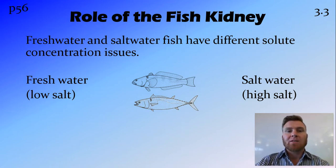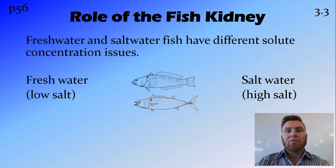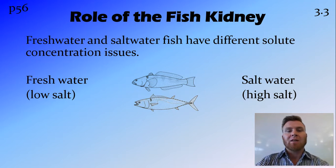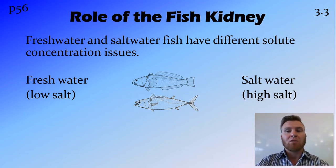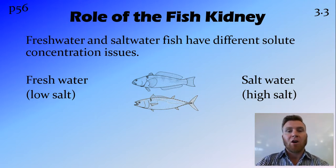Before I get into the difference between freshwater fish and saltwater fish, I want to point out that fish have a similar concentration of salt in them — whether it's a freshwater fish or a saltwater fish. That similar saltiness sits between the low salt of freshwater and the high salt of saltwater. So you've got to compare the fish to the surrounding environment that it's in.